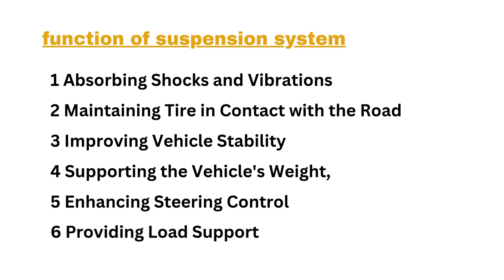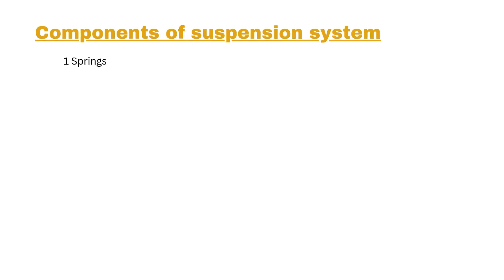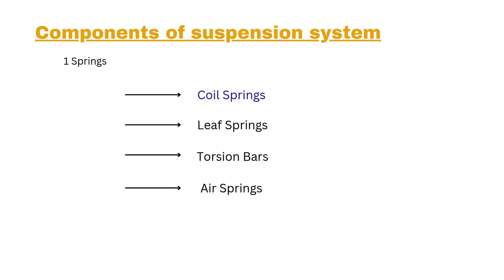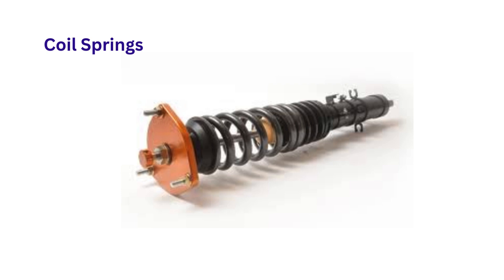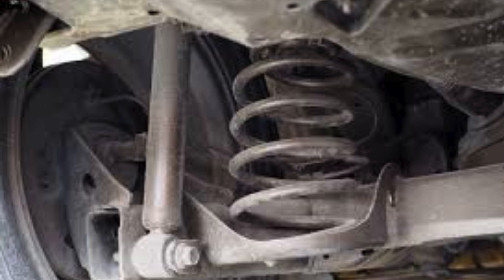Now let's look at the components of the suspension system. Number one: springs. We have four main types of springs — coil springs, leaf springs, torsion bars, and air springs. Coil springs are the most common type used in modern suspension systems, absorbing shock and supporting the vehicle's weight.